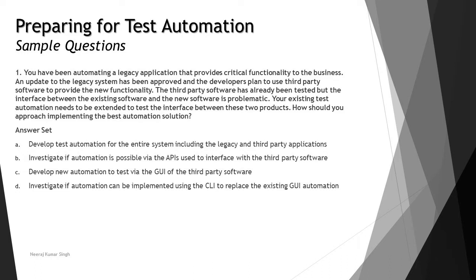When you look at option B — investigate if automation is possible via the APIs used to interface with the third-party software. This is the best approach for the automation solution, because you're looking at third-party software providing new functionality. Investigating whether automation is possible via the APIs used to interface with the third-party software would be the best option.